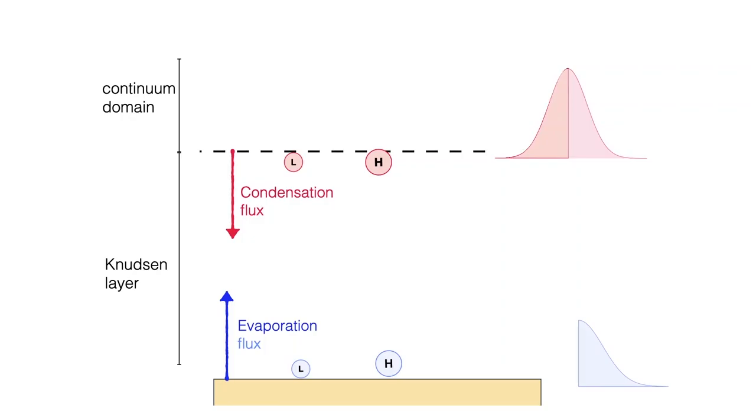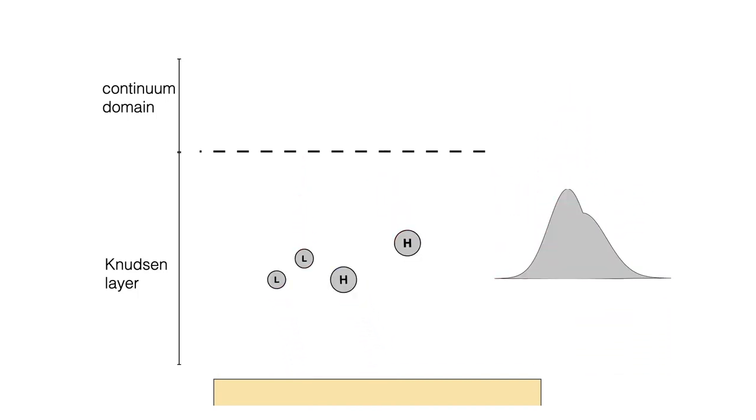The vapor close to the interface cannot be described by the hydrodynamic equations due to non-equilibrium effects. This non-equilibrium results in a kinetic layer called the Knudsen layer, caused by a non-Maxwellian description of the species. The presence of this layer creates a jump of macroscopic variables such as temperature, density and velocity at the vapor-liquid interface. In this thesis, we have developed a model derived from the solution of the Boltzmann equation that includes the jump of properties across the Knudsen layer.